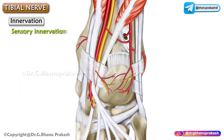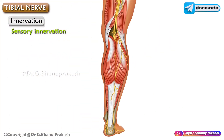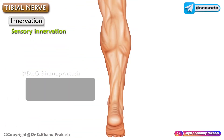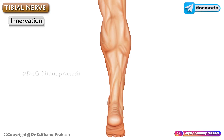For sensory innervation, the medial calcaneal branches pierce the flexor retinaculum and supply the skin of the back and lower surface of the heel. The sural nerve, a branch of the tibial nerve, supplies the skin on the lower lateral part of the leg, lateral border and adjoining part of the dorsum of the foot, and the lateral side of the little toe.